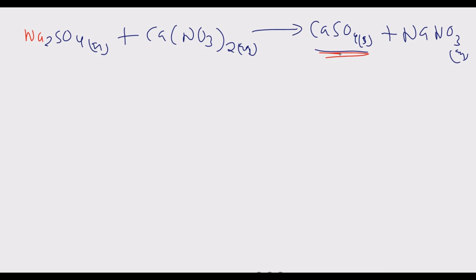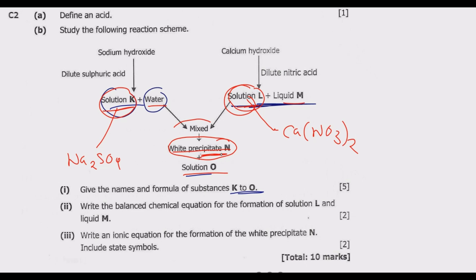Always balance the equation when you have time. On the left we have 2 sodium; on the right, 1 — so introduce a coefficient of 2 before NaNO₃. Sulfur: 1 and 1 — balanced. Oxygen: 4 + 6 = 10 on the left; 2×3 + 4 = 10 on the right — balanced. Calcium: 1 and 1 — balanced. Nitrogen: 2 and 2×1 = 2 — balanced. So the white precipitate N is calcium sulfate (CaSO₄), and solution O is sodium nitrate (NaNO₃).